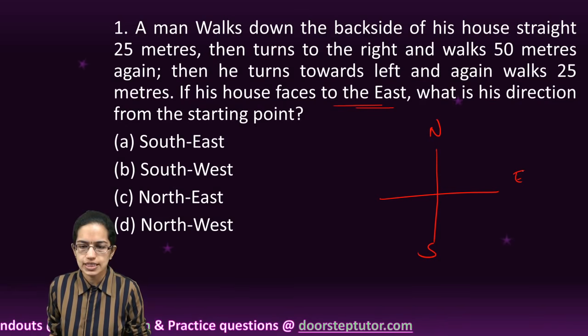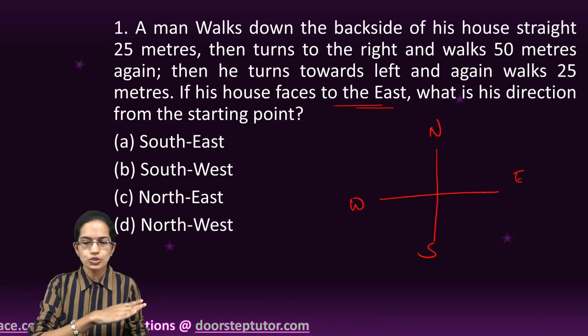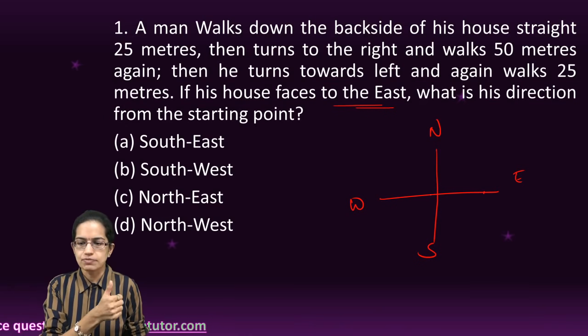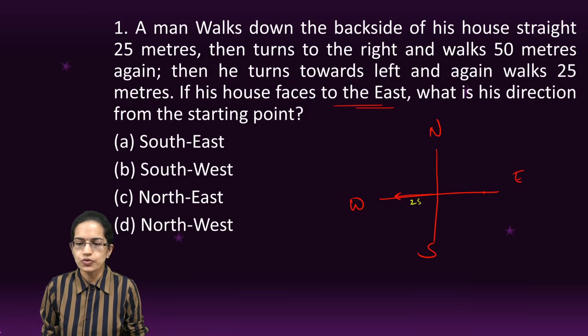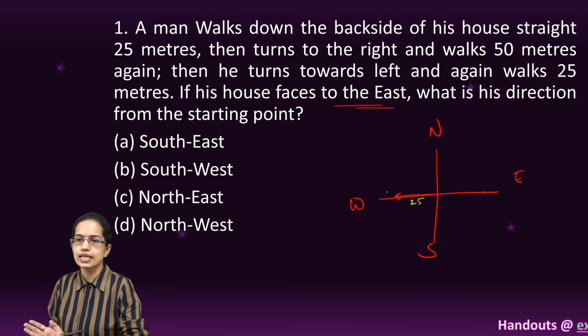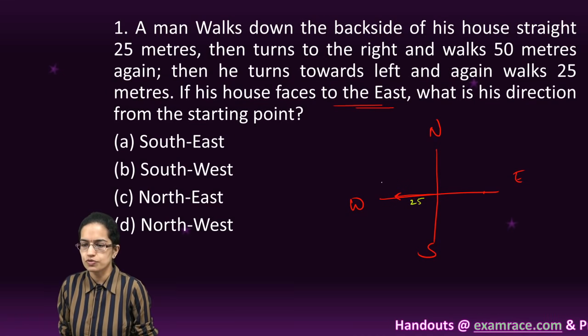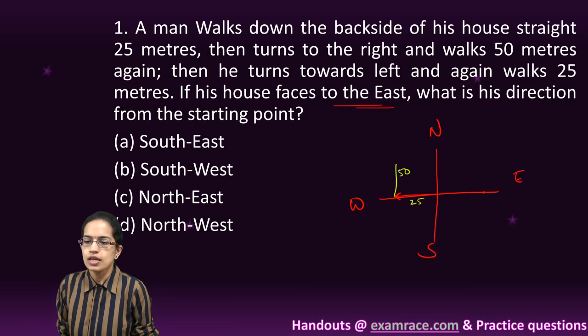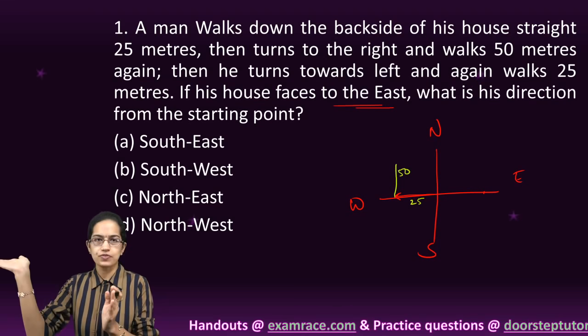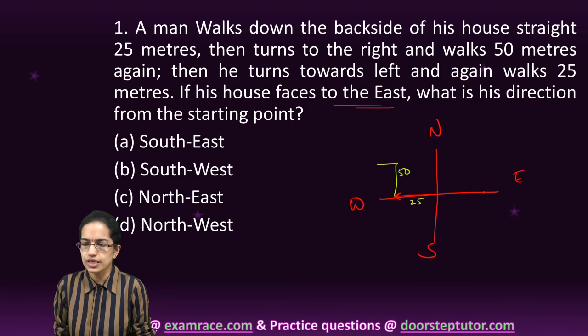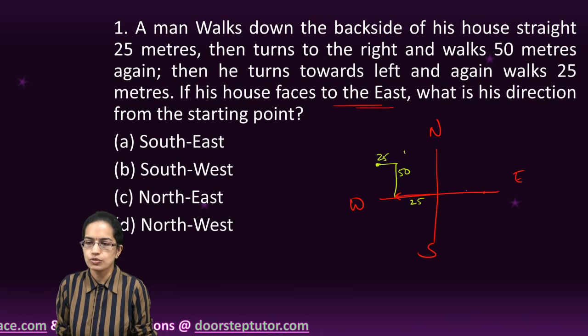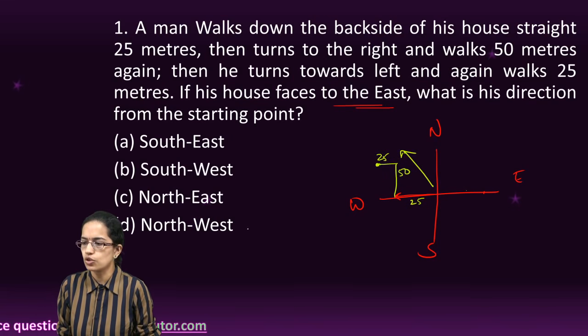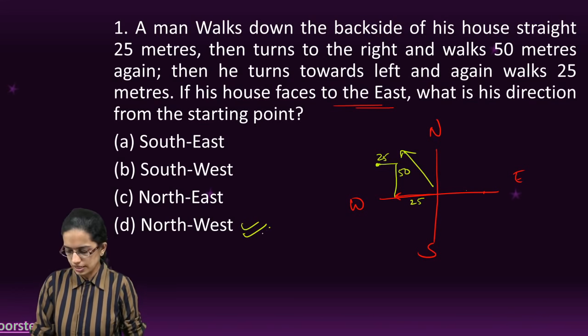The house faces towards the east, so the person exits from the west. He walks straight 25 meters, takes a right and walks 50 meters, then takes a left and walks 25 meters. In which direction is he from his house? The answer is northwest.